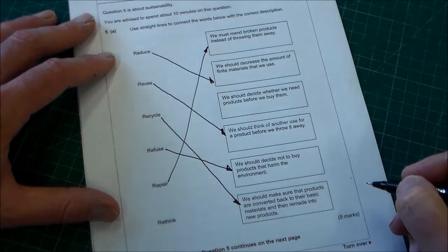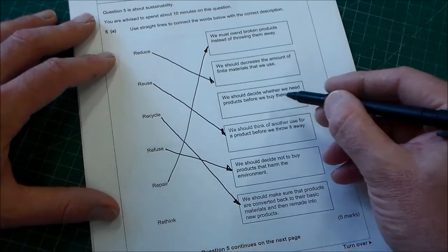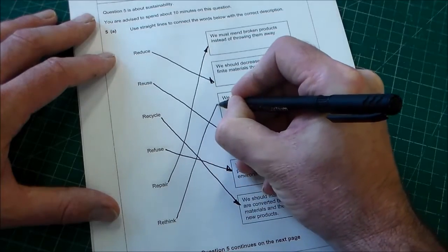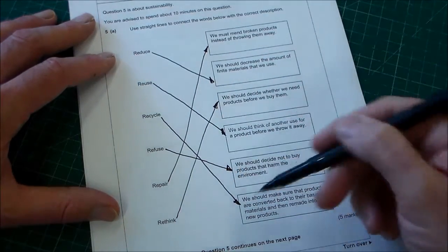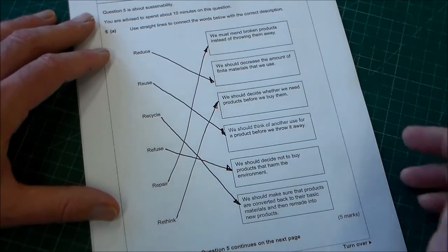And last of all, rethink. We should decide whether we need products before we buy them is rethink. So there, we've connected those up. Looks a bit messy, but that's the right answers. So there's five marks there.